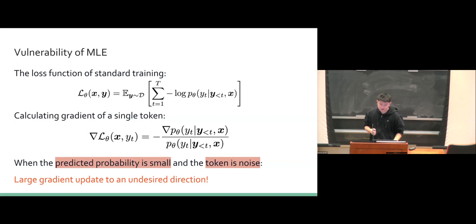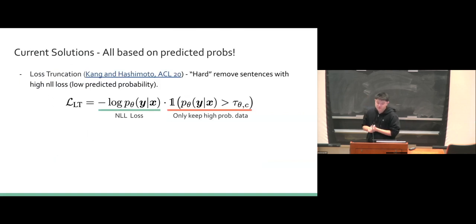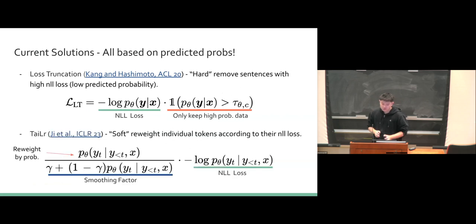How to solve this vulnerability? There has been mainly two ways. The first way is a hard way to truncate high loss tokens. This is called loss truncation. It's basically hard removing sentences with high negative log likelihood loss. Loss truncation can also be done in a soft and fine-grained way. Instead of hard truncating the data, we reweigh each token by its predicted probability. However, the predicted probability of the tokens are not accurate at the beginning of training. To compensate for this, the authors introduced a smoothing factor gamma.